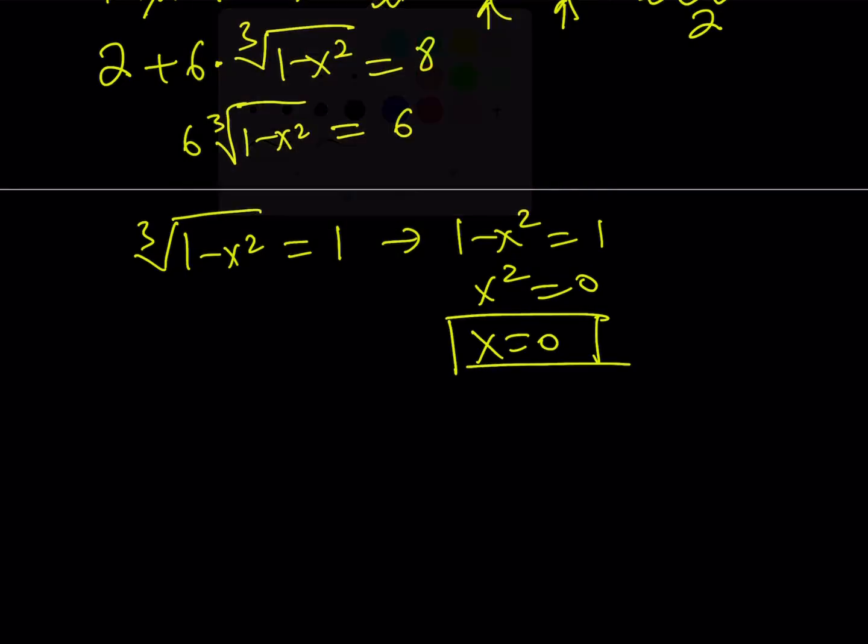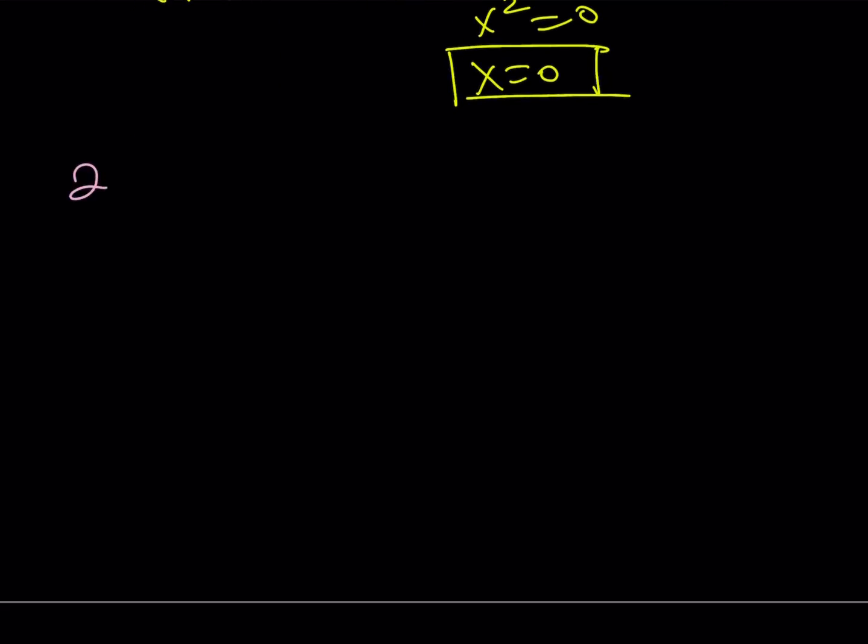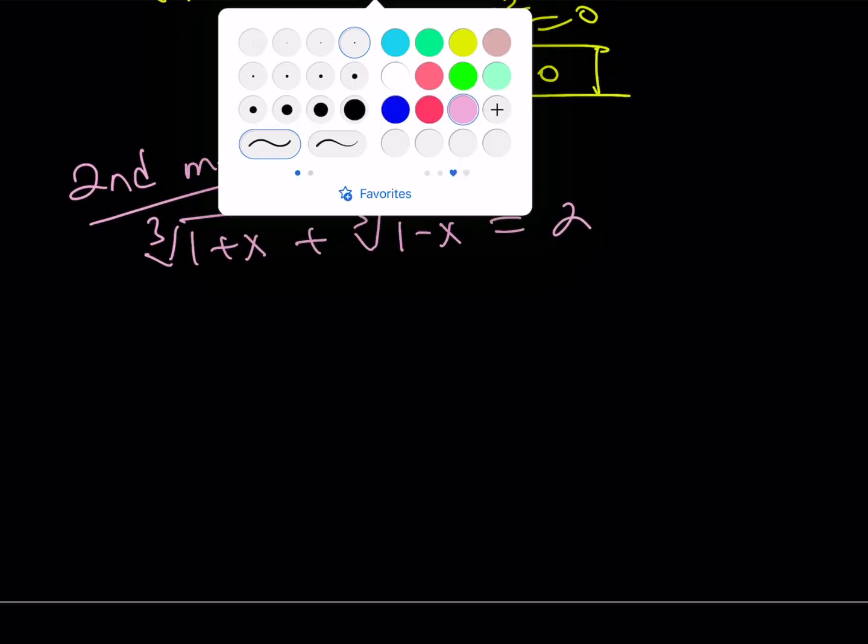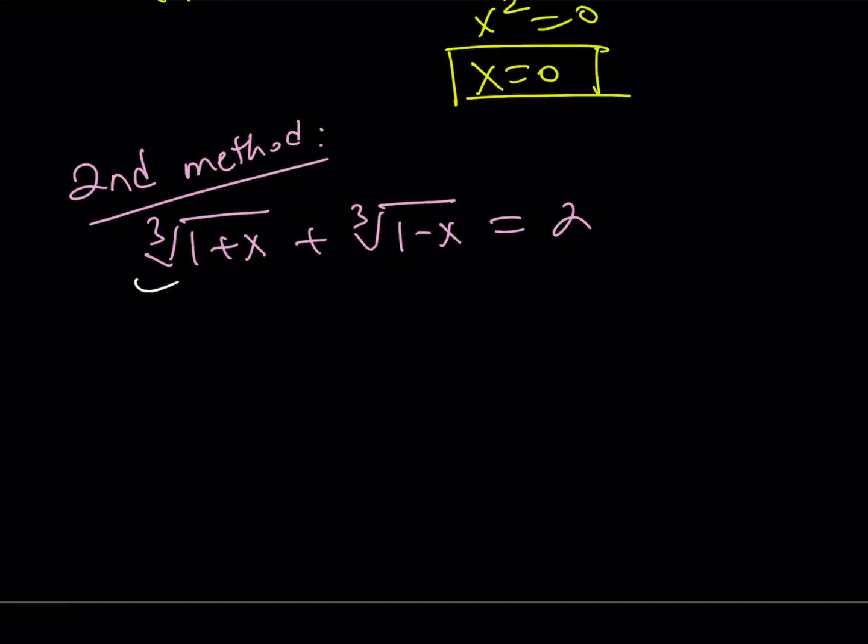Let's go ahead and proceed with the second method. Now, the second method, even though it's kind of similar to the first one, it's a little different. I want to use substitution. So, let's go ahead and name this A and name this B.